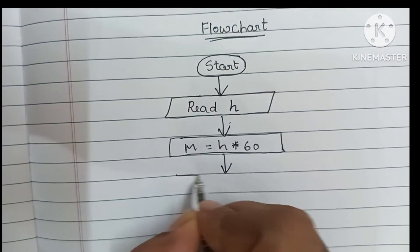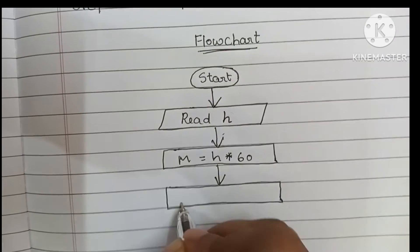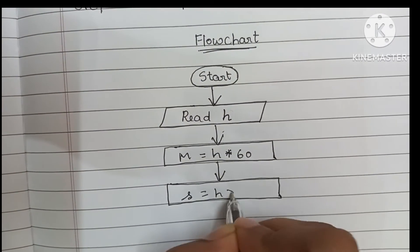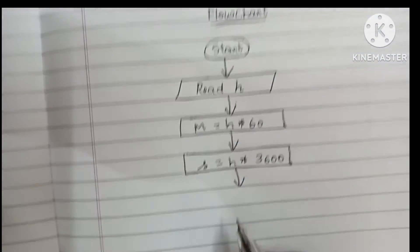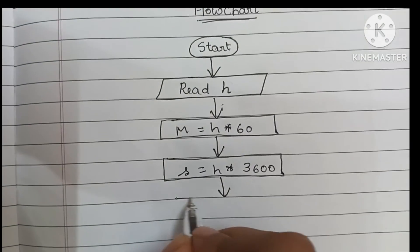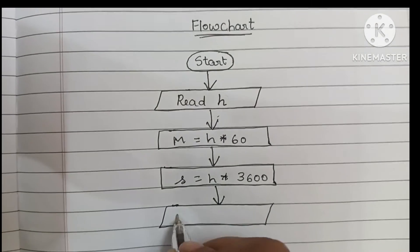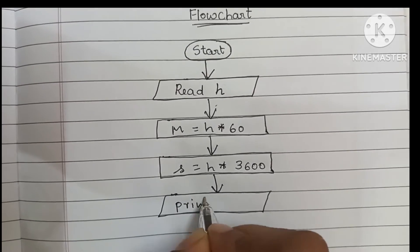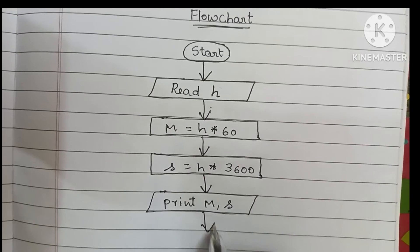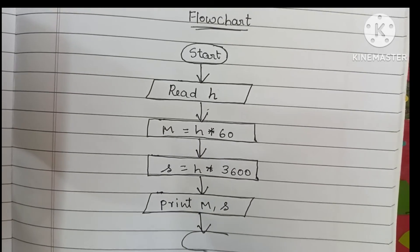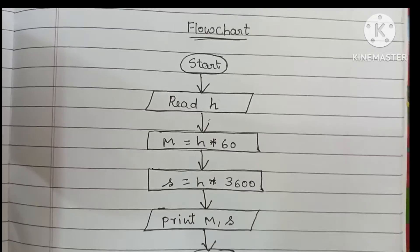Next we have to find seconds, also written within a rectangular shape: s is equal to h into 3600. Next step we have to print the output. Output values are always written within a parallelogram shape — here print m and s. Next step we have to stop the flowchart using the stop statement. The stop statement is always written within an oval shape.